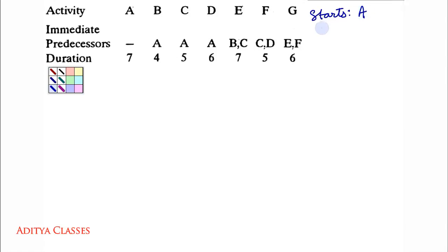Then who will end my network? All the activities that are not in this predecessor list. They all will end. A is here. Then we have a B, C, D, E, F.